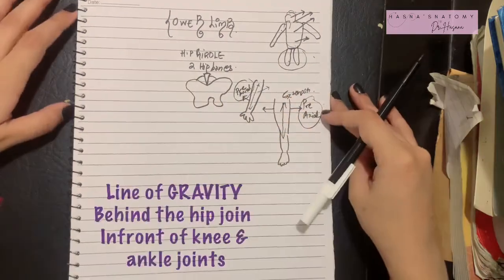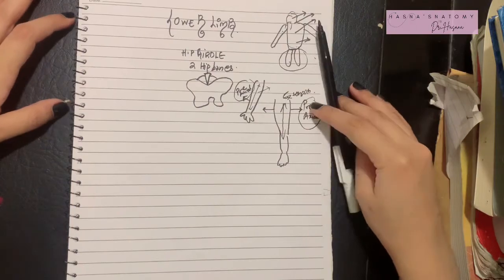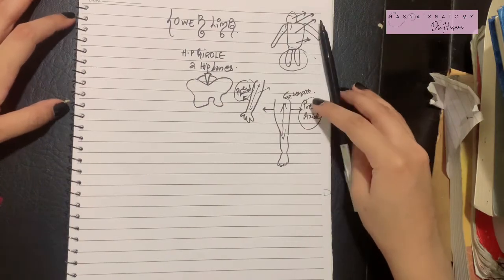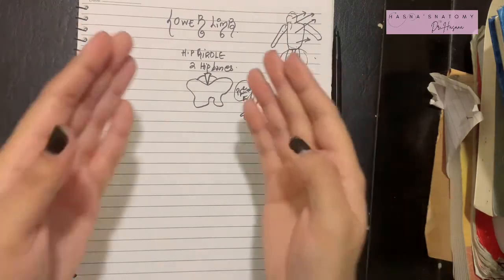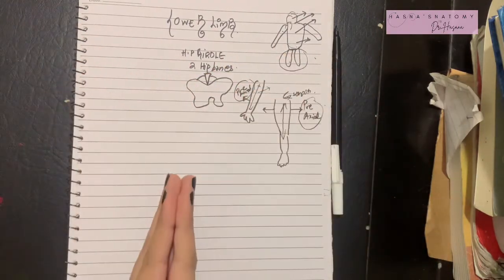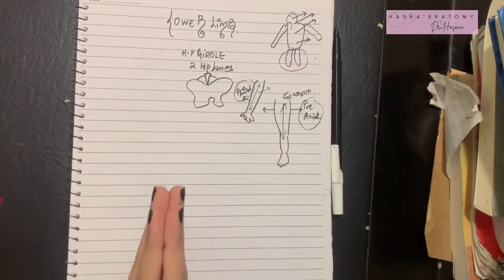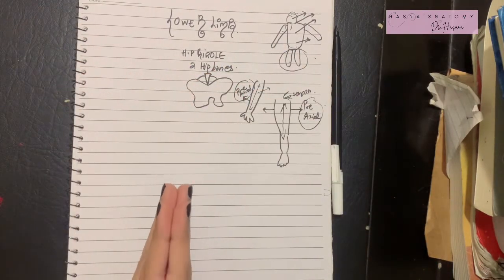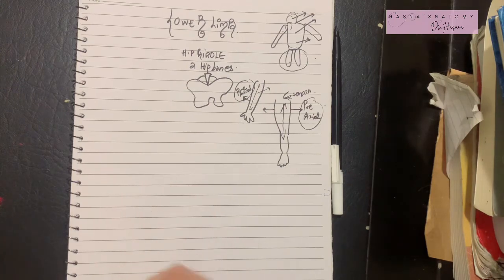So let's begin the region of the lower limb by discussing the hip girdle first. In the next video we will talk about the hip bone.